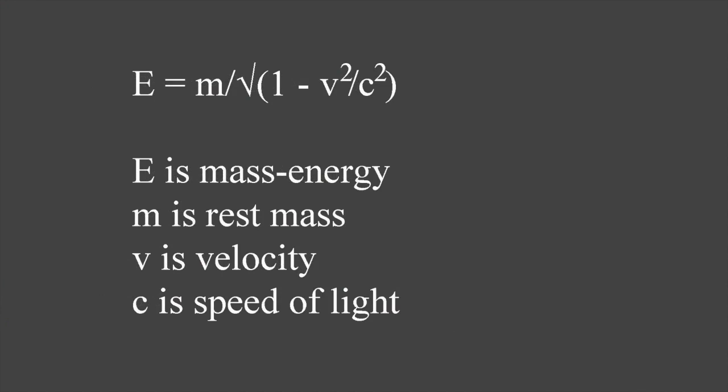The existence of tachyons is allowed by the mathematics of the special theory of relativity. One of the basic equations is E equals m over the square root of one minus v squared over c squared, where E is the mass energy of a particle, m its rest mass, v its velocity, and c is the speed of light. This shows that for tardions — particles of ordinary matter — E increases as v increases and becomes infinite when v equals c, thus preventing an initially slower-than-light particle from being accelerated up to and beyond the speed of light.